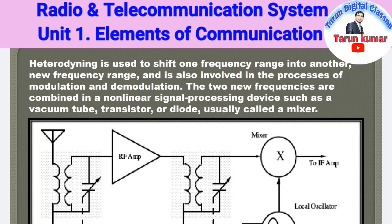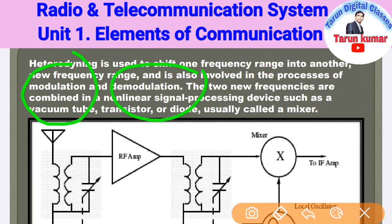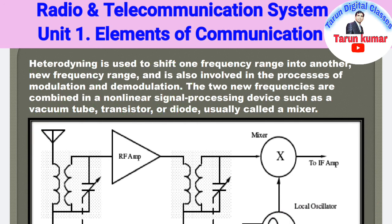Heterodyne is also involved in the process of modulation and demodulation. Modulation and demodulation will be studied in detail in the next coming classes. Modulation basically means adding a higher or carrier frequency with the original signal in order to enhance and improve the quality of the signal. Demodulation is the reverse process, and both topics will be taught in detail in this subject.